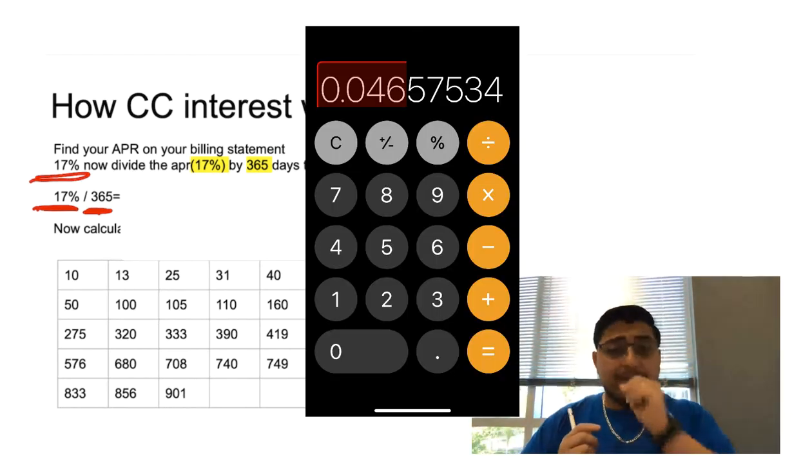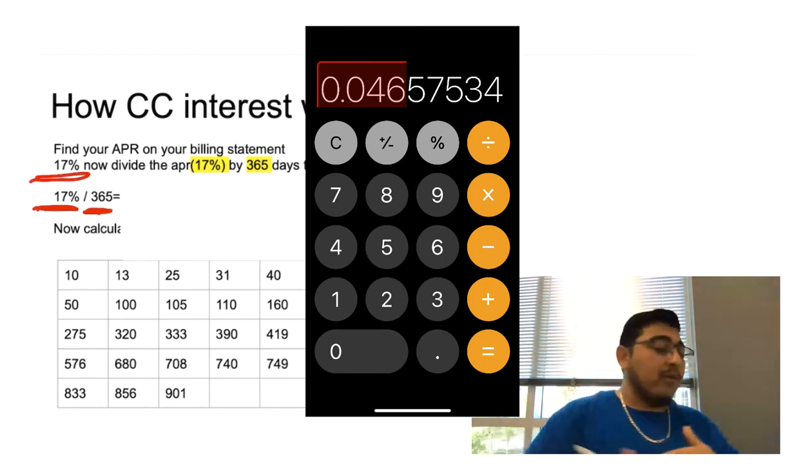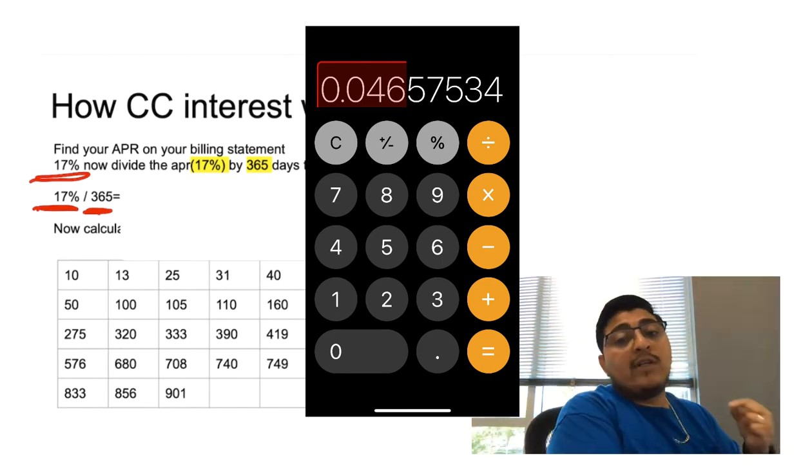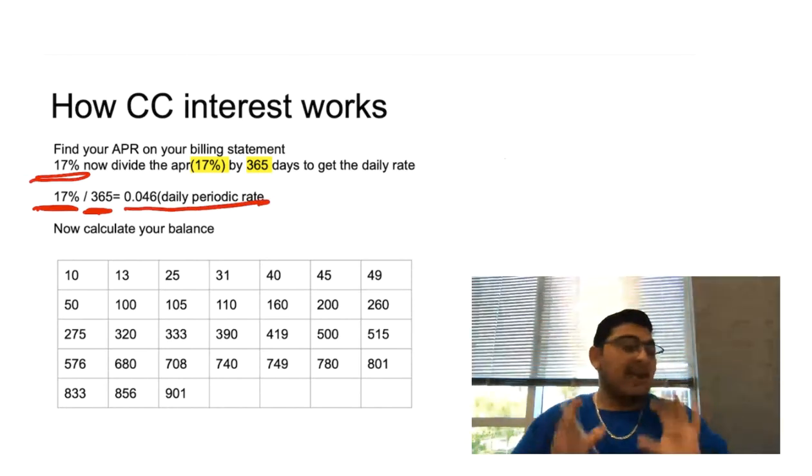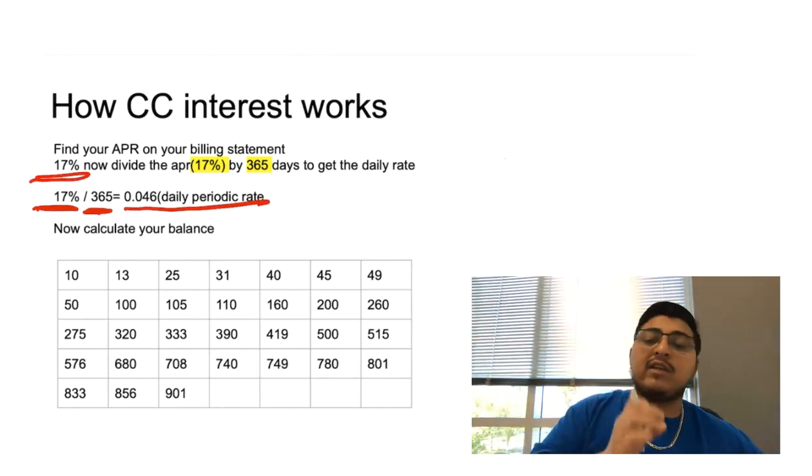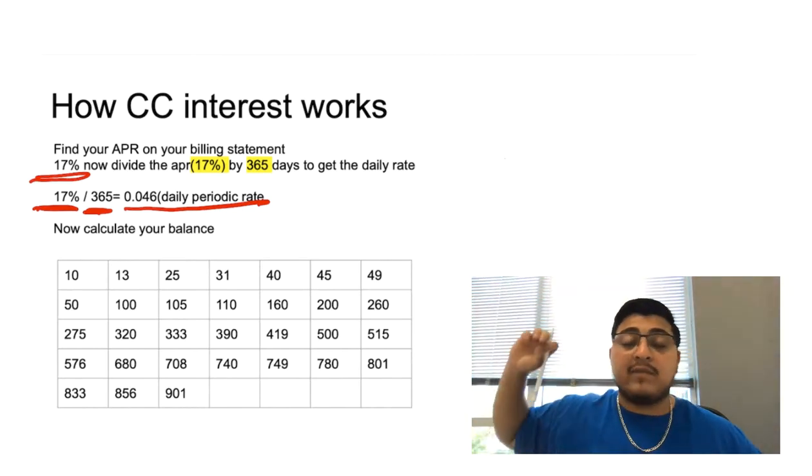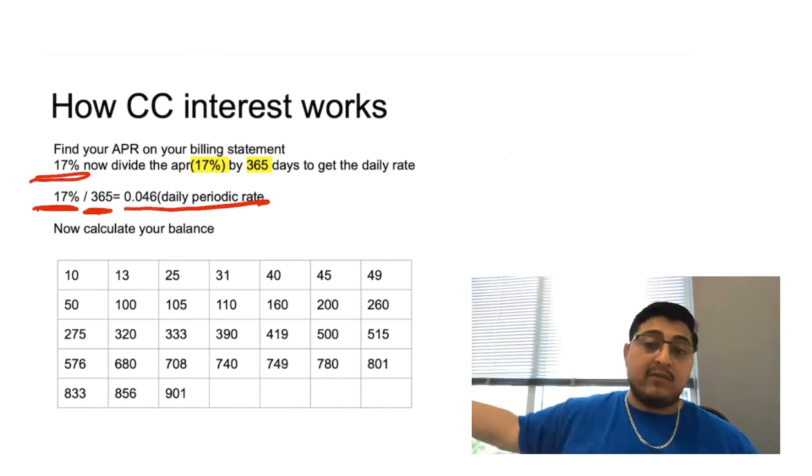You just get the first two digits after the decimal, which in this case is going to be 0.046, and that's our daily periodic rate. Now that we have this number, we're just going to set it to the side because we're going to use this to plug it in our formula down later towards the end of this video.